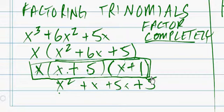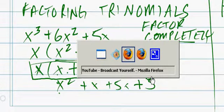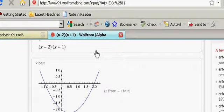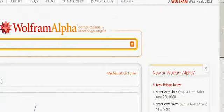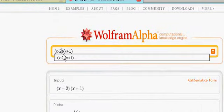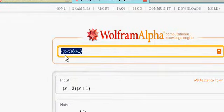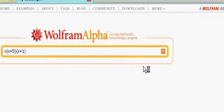Now, let's take a look at that with Wolfram Alpha. And it's x times x plus 5 times x plus 1. Go ahead and copy that while we're here and hit the enter key.